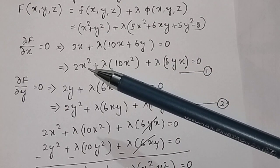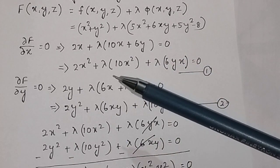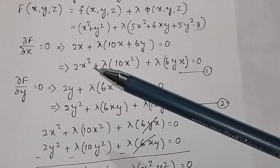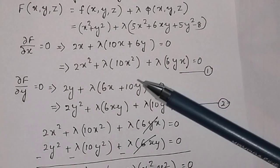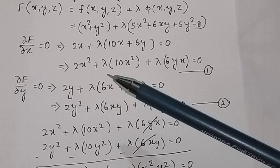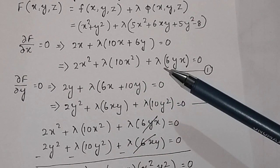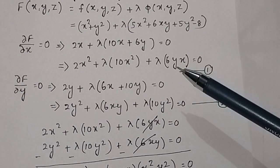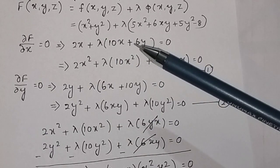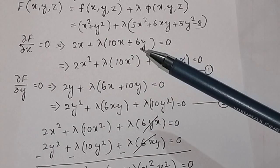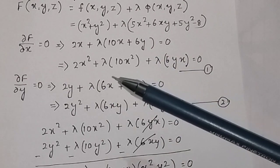If we multiply through by x, we get: 2x² + λ·10x² + λ·6yx = 0. We multiply by x here to make the λ·6yx term match the corresponding term in the y-equation, allowing us to equate or subtract the two equations later.